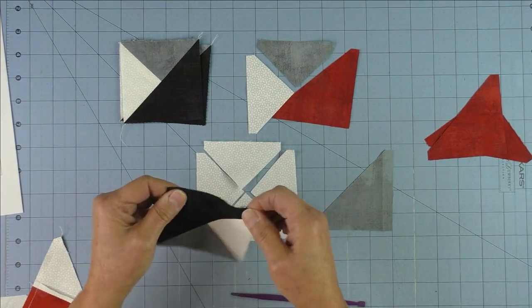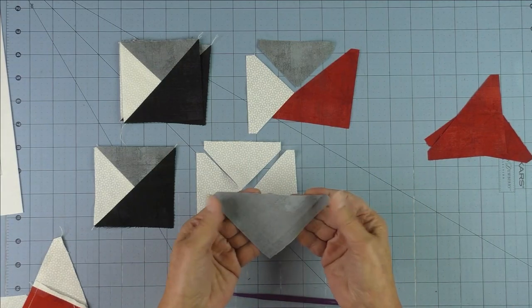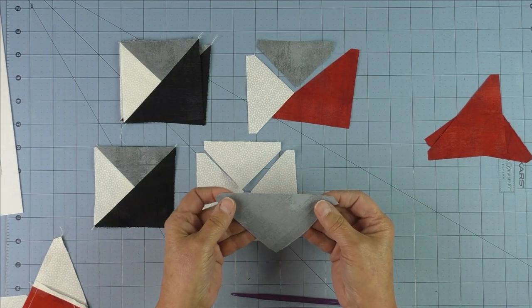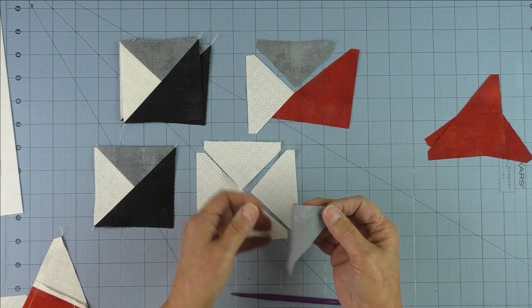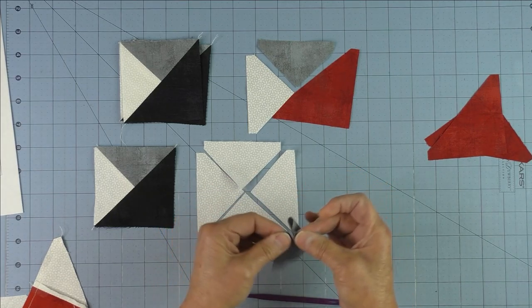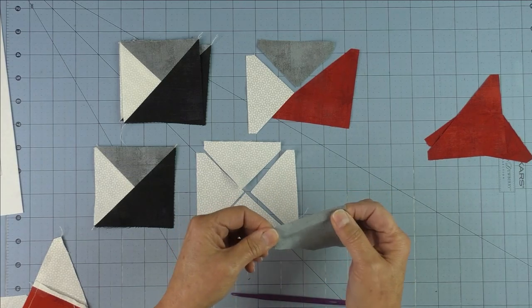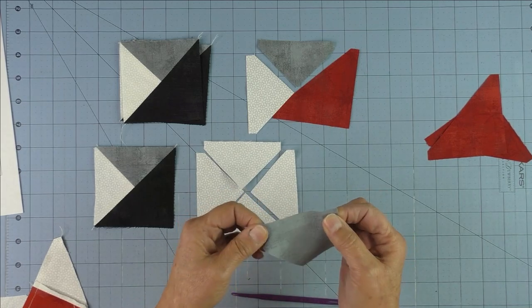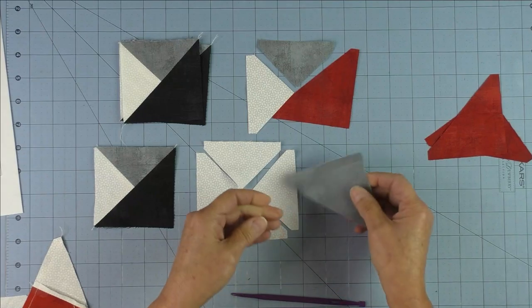You can really see the bias in this half square triangle. If I pull it, it really distorts and stretches, but this part doesn't. The lengthwise grain, which is stronger than the crosswise—this is the lengthwise, it's louder; this is the crosswise, it's a little bit lower tone.